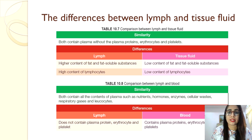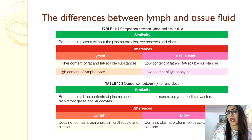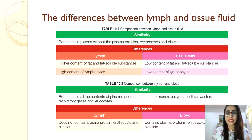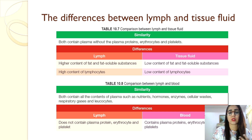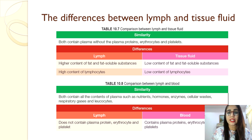Now let's look at the differences between lymph and tissue fluid. This diagram can be found on page 190 of your textbook. Lymph has a higher content of fats and fatty substances and a higher content of lymphocytes compared to tissue fluid. Regarding lymph and blood, both contain all plasma contents such as nutrients, hormones, enzymes, and cellular waste, but lymph does not contain plasma protein, erythrocytes, or platelets, as these are too large to pass through the capillary walls.